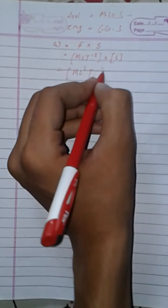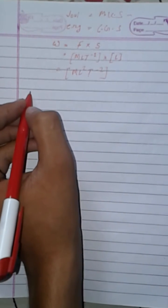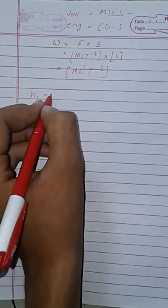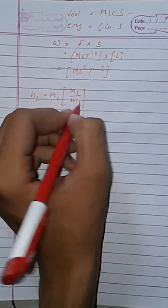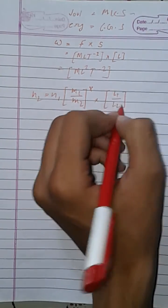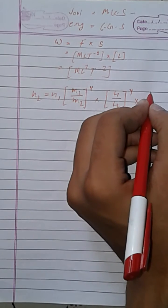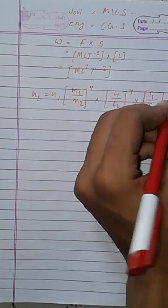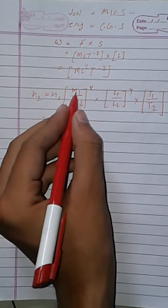We know the conversion formula: N₂ equals N₁ times (M₁/M₂) to the power x, times (L₁/L₂) to the power y, times (T₁/T₂) to the power z. Here N₁ is equal to 1.